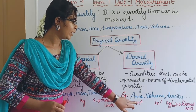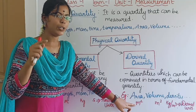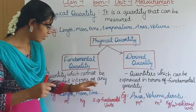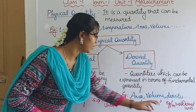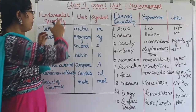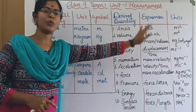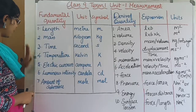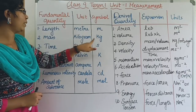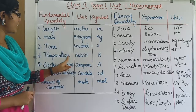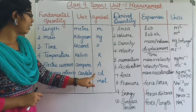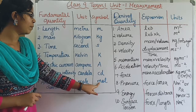What is the unit? Length into breadth: meter into meter is meter square. Volume is meter cube. Length — unit meter, symbol M. Mass — unit kilogram, symbol kg. Time — second, symbol S. Temperature — Kelvin, symbol K. Electric current — ampere, symbol A. Luminous intensity — candela, symbol CD. Amount of substance — mole, symbol MOL.